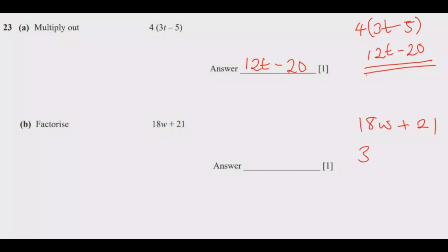So, I'm going to write 3 outside here. Then, we say, 3 into 18, it will go 6, 3 into 18w, it will go 6w times plus, then we say, 3 into 21.